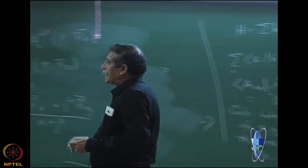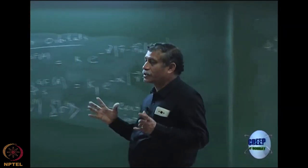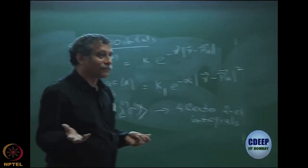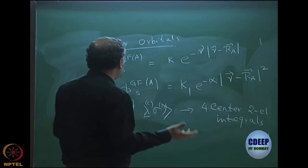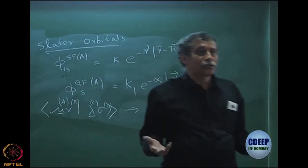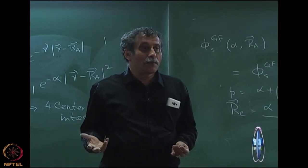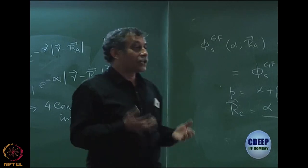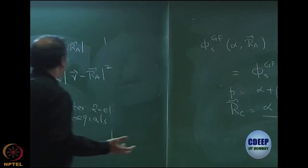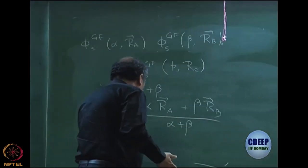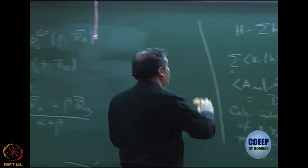That is the reason atomic orbitals should be used as Gaussians — but the question is, atomic orbitals are not Gaussians. Actual atomic orbitals are Slater. But you can say you need a basis and you do not care, though the chemist will ask whether it is a good basis. So we must go back to the atomic orbitals and see what can be done to express them in terms of Gaussians.